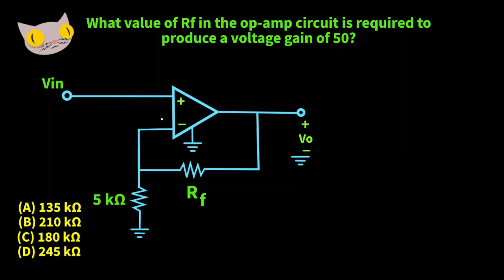Now this is a non-inverting op amp. We have the voltage source going into the positive terminal. We have a 5k ohm resistor here. Let's find the value of RF.